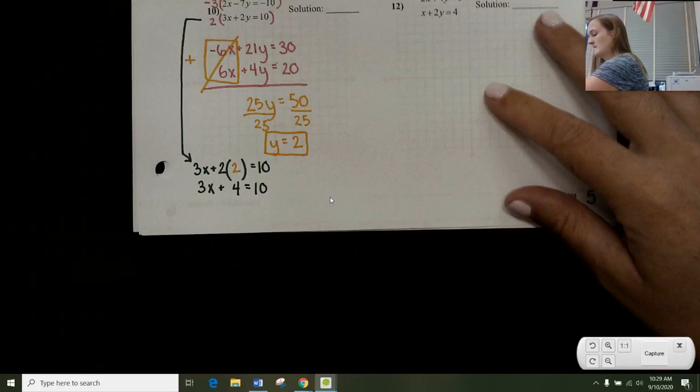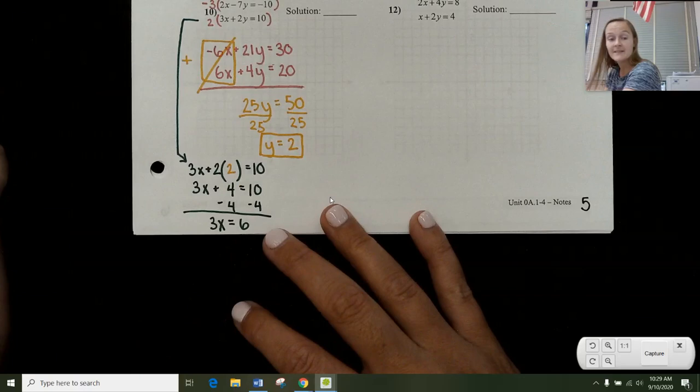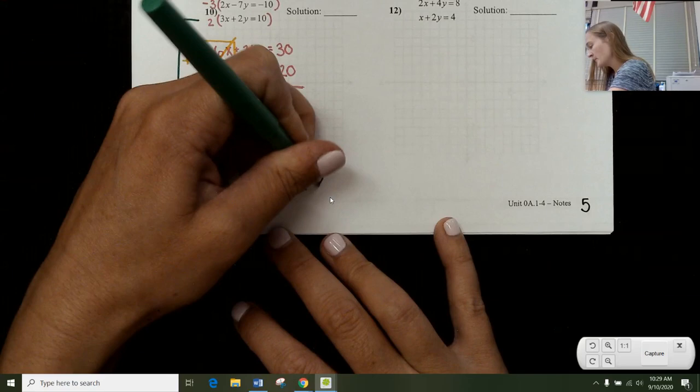Subtract 4 from both sides. So 3x equals 6. And if I divide by 3 on both sides, I get x equals 2.